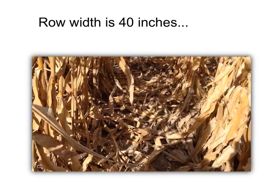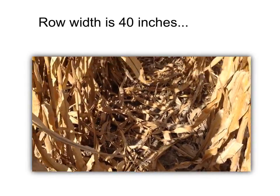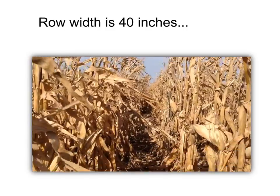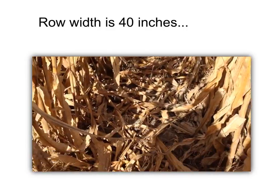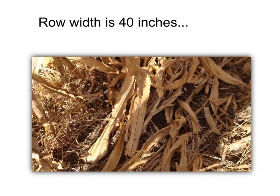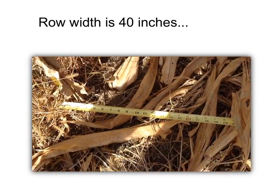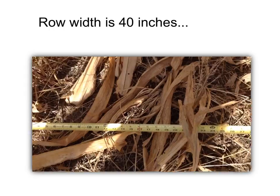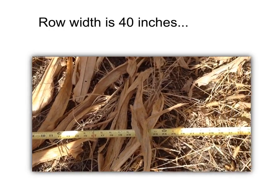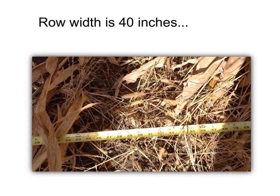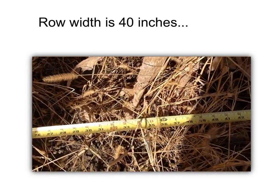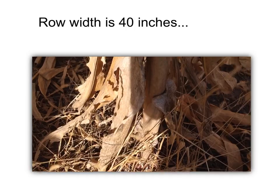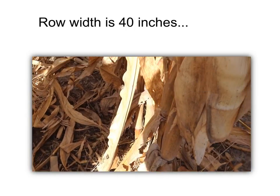The first thing you need to do is to measure your row width of the corn. In this case it's 40 inches. You need that information to determine your sample area for estimating your yield.